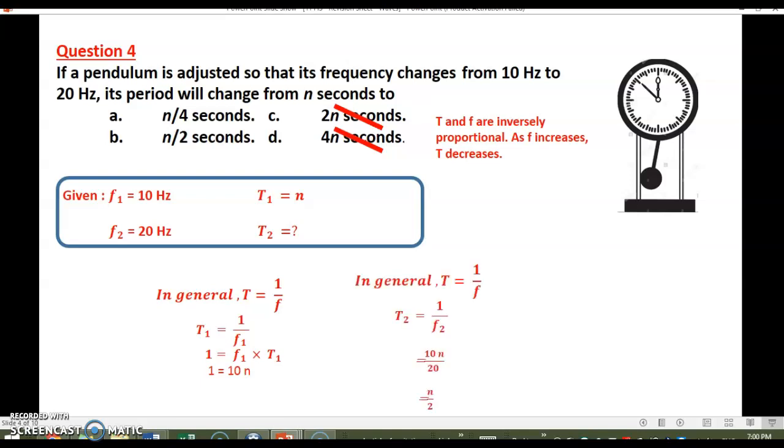Now again applying it for the second case in which the frequency increased, we can say that T2 equals 1 over f2. So we are looking for T2 now. All we have to do is substitute for 1 and f2. So 1 was proved to be equal to 10n.